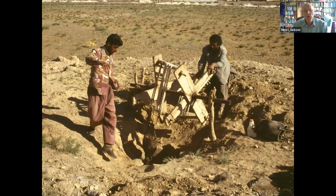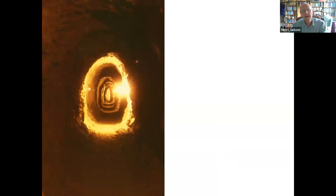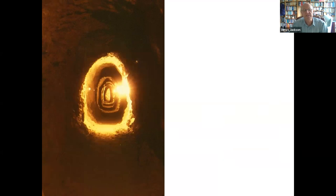These tunnels are called canats. Here are people maintaining one with an ancient windlass, lifting buckets of earth. Looking down the hole — which can be tens of meters deep — and along the tunnel, light comes down from the vertical shaft above. When functioning, they produce beautiful cool water in the village out of the desert. Some of these things are tens of kilometers long and up to 100 meters deep — wonderful feats of engineering.